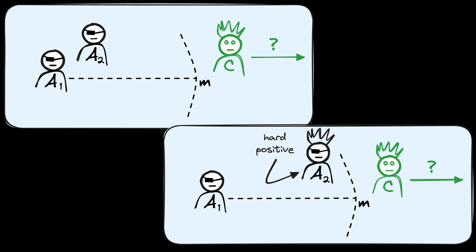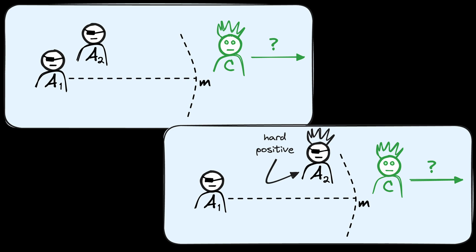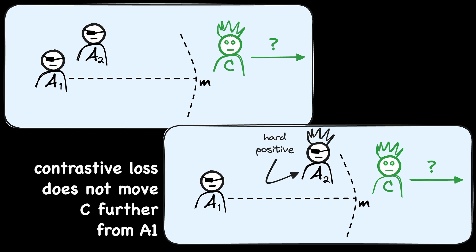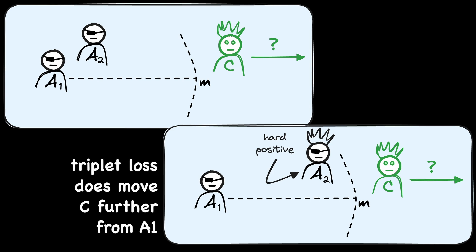Similarly for hard positives: in the initial case, triplet loss agrees with contrastive loss — the distance between A2 and C is sufficiently large, no action needed. But when A2 becomes a hard positive, contrastive loss does nothing to C because the margin between A1 and C is still larger than m. Triplet loss, however, sees that the margin between A2 and C is now too small, giving incentive to move C further away. These two cases show that triplet loss handles hard positives and hard negatives in a way contrastive loss simply cannot.